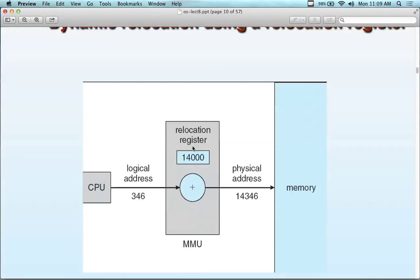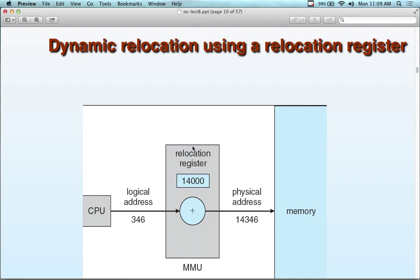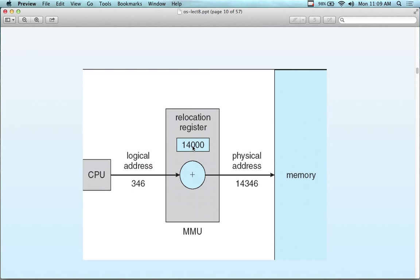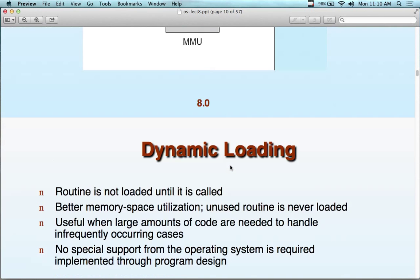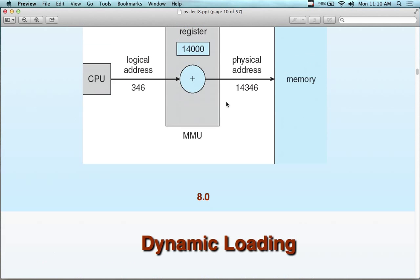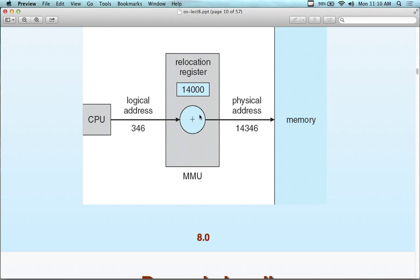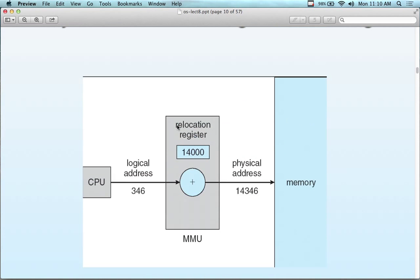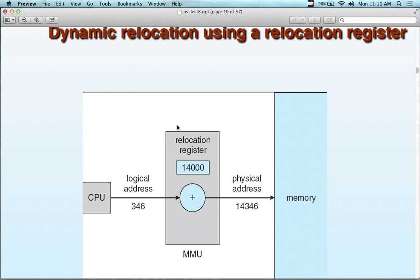The MMU gives us our logical representation through dynamic relocation using a relocation register. The CPU looks at the MMU, and the MMU translates the logical to the physical address. This is standardized on most computer systems, so the operating system just needs to interface with the MMU — memory is controlled by your hardware. The MMU sets the speed, size, location, allocation, and mapping for us.